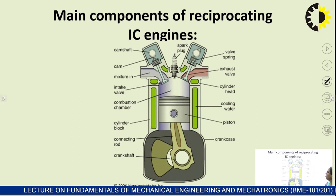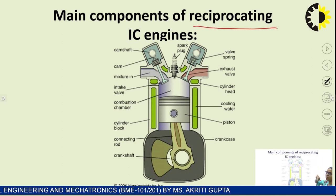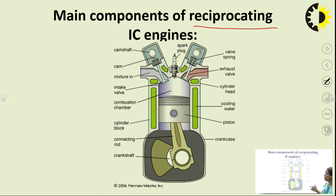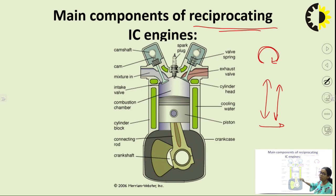Now let us understand the main components of a reciprocating IC engine. Before understanding the components, we need to understand the term 'reciprocating.' There are generally two types of movement: rotary and reciprocating. When any system moves to and fro along a single line, we call it reciprocating motion, and when there is rotation, it is rotary motion. In an IC engine, the piston reciprocates, so we call it a reciprocating IC engine.